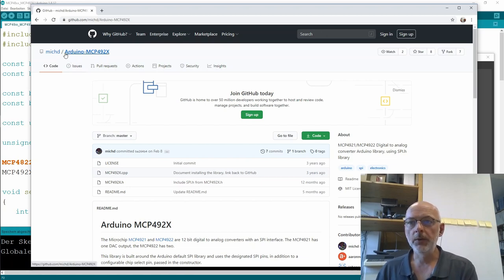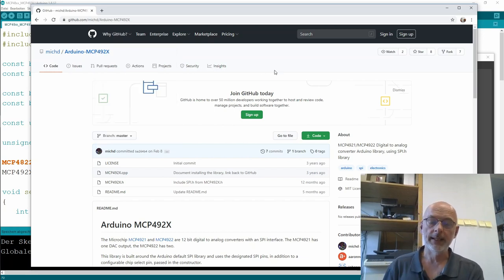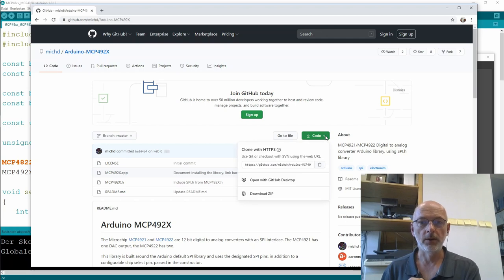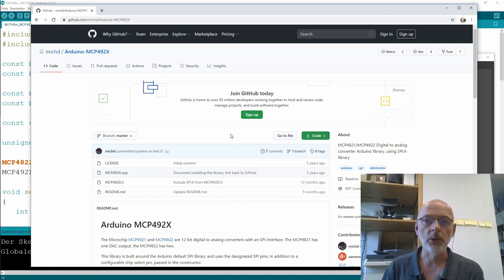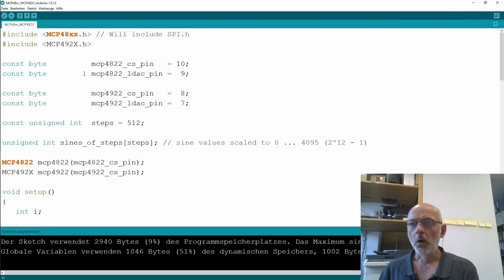So I'm using the Arduino MCP492X library from MichD. And I got it from GitHub. It's not directly available in the Arduino environment. So you have to download the zip file and manually include it in the Arduino library manager. So what are the changes in the code? I'm including that MCP492X library here. And there will be a link down in the description.